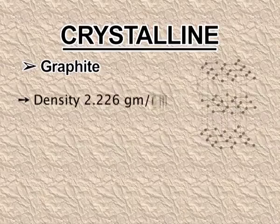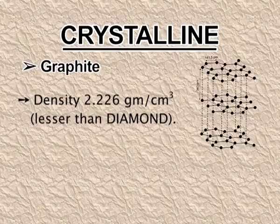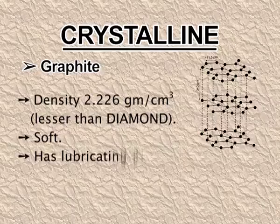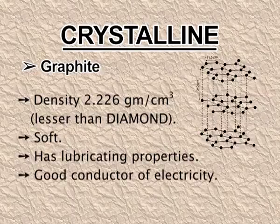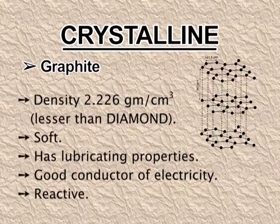Graphite is another allotropic crystalline form of carbon. Its density is 2.226 grams per centimeter cube, lesser than diamond. Graphite is soft and has lubricating properties. It is a good conductor of electricity and is reactive. All these properties of graphite will be explained through its structure.